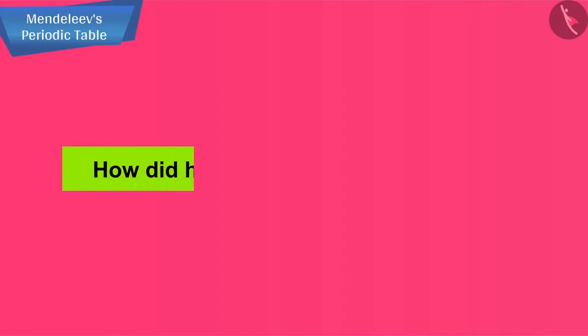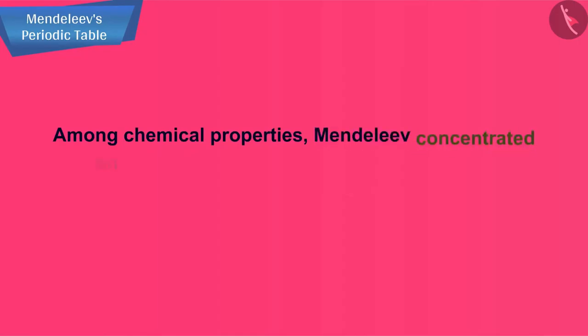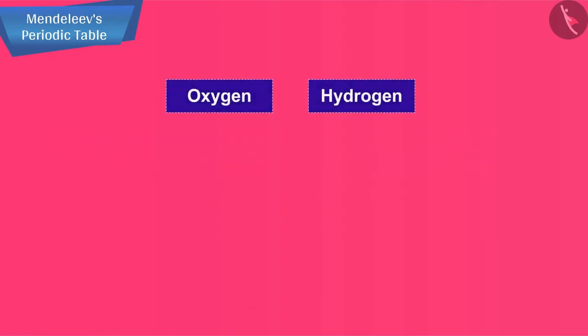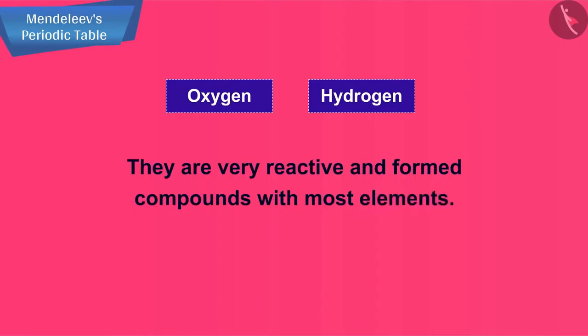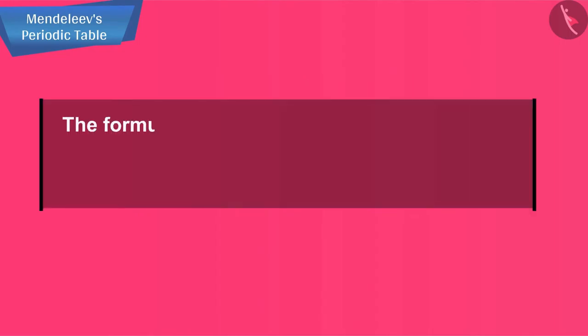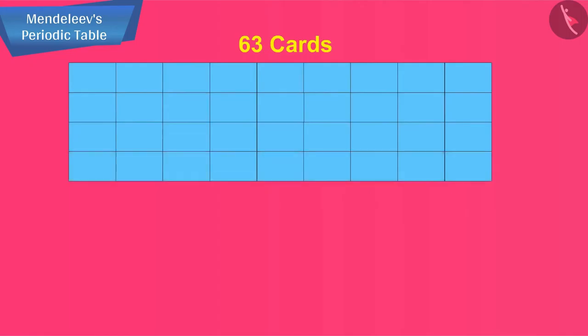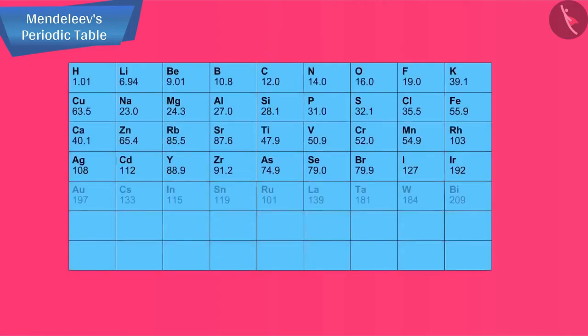How did he come to this periodic law? Among chemical properties, Mendeleev concentrated on the compounds formed by elements with oxygen and hydrogen. He selected hydrogen and oxygen as they are very reactive and formed compounds with most elements. The formulae of the hydrides and oxides formed by an element were treated as one of the basic properties of an element for its classification.